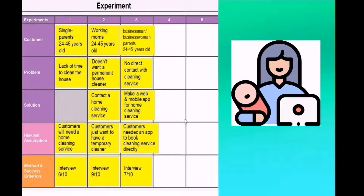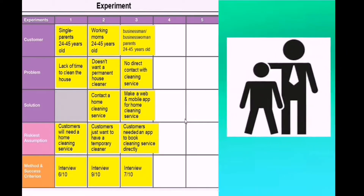The third customer in the experiment is businessman or businesswoman parents, ages 24 to 45 years old. The problem is no direct contact with a cleaning service. The solution is a web and mobile app for home cleaning service. The riskiest assumption is that customers need to book a cleaning service directly, and the success criterion is 7 out of 10.